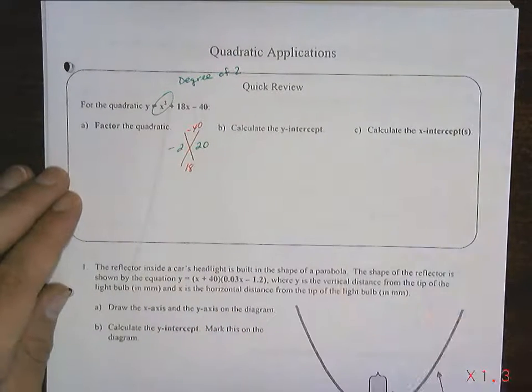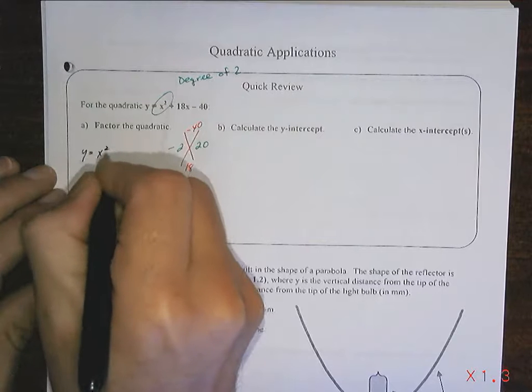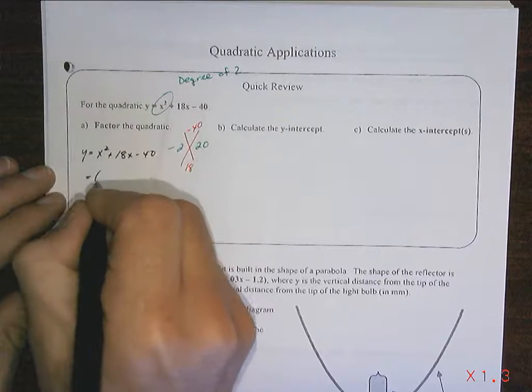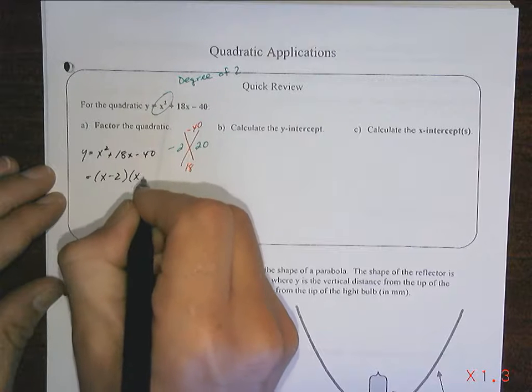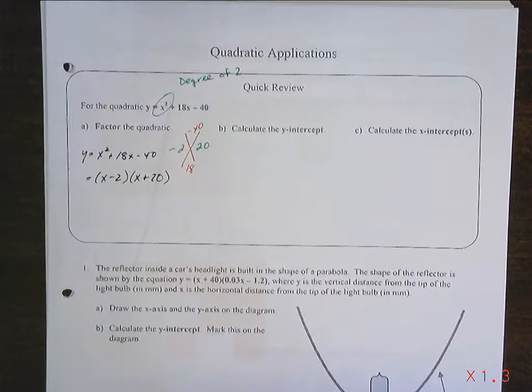Negative 2 plus positive 20 is 18. Negative 2 times positive 20 is negative 40. It works. That means that I know that this equation, y equals x squared plus 18x minus 40, is, in fact, x minus 2 times x plus 20. It is factored, and it's correct.